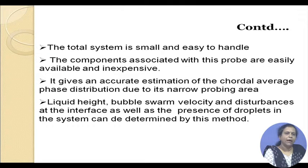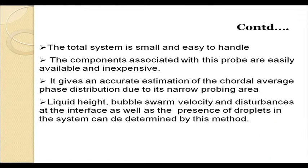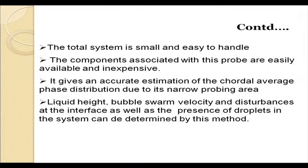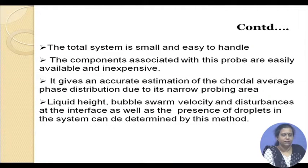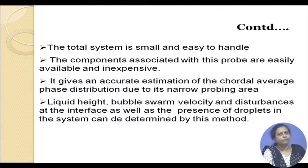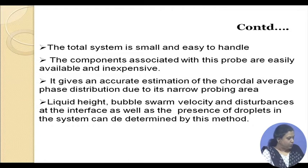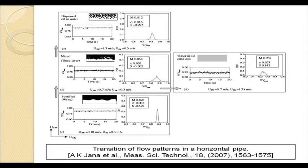Apart from flow distribution, the optical probe can also measure a large number of other parameters, for example bubble swarm velocity. The disturbances at the interface can also be detected - when interface disturbances are more, we get a more wavy signal; when the interface is smooth, we get a much smoother signal.